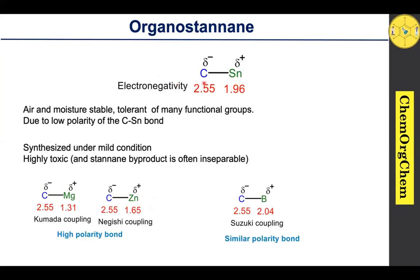Before moving to the catalytic cycle, we should see the organostannane properties. Organostannanes are air and moisture stable and tolerant to many functional groups due to the low polarity of the carbon-tin bond. Unlike Kumada coupling and Negishi cross-coupling, where organomagnesium and organozinc are involved respectively, those bonds are high polarity bonds when compared to the organostannanes.